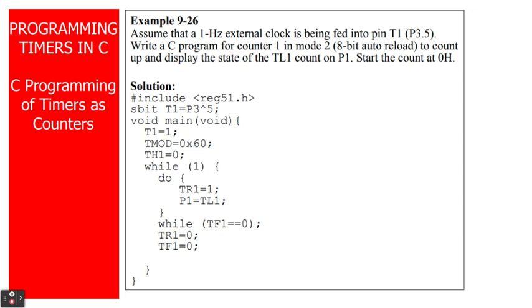TR1 will run the timer and port 1 will take the values of TL1. This will be happening while the timer flag 1 is still equal to 0. After that, when the timer stops, then we will be resetting our TR1 to 0, which means the timer will be stopped because the counting is finished and it reached already 1111 and it will overflow. Then the timer flag 1 will be also reset to 0. So what we're talking about is C programming of timers as counters.